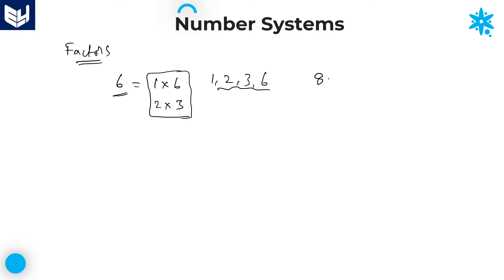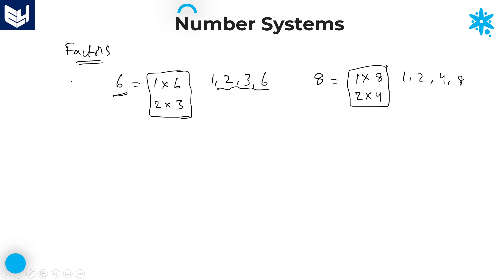Now let's take another example: eight. Eight is nothing but one times eight, and also two times four. So one, two, four, and eight are all factors of eight. I explained factors of eight because to learn the concept of prime numbers, factors play a major role.